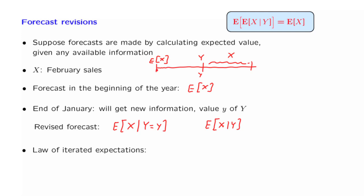Now, what does the law of iterated expectations tell us in this case? It tells us that the expected value of the revised forecast is the same as the original forecast.